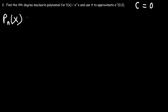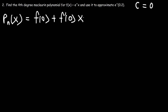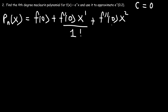Let's write the general formula for the nth degree Maclaurin polynomial. Instead of f(c) we now have f(0), and instead of (x - c) we simply have x. So the formula becomes f(0) + f'(0)·x/1! + f''(0)·x²/2! + ... continuing until f^(n)(0)·xⁿ/n!.